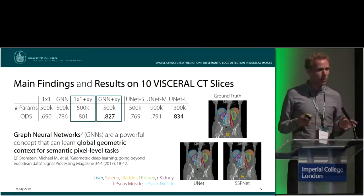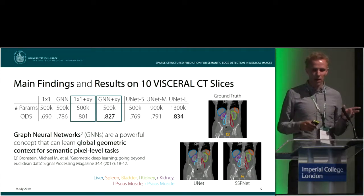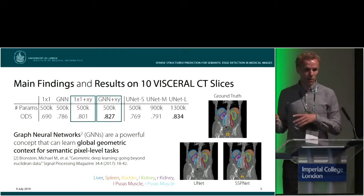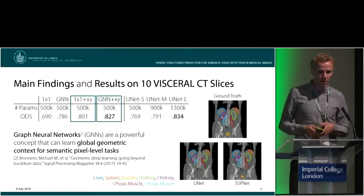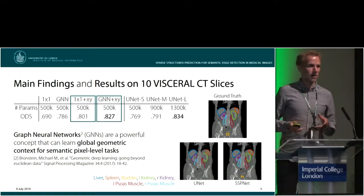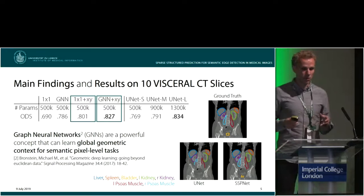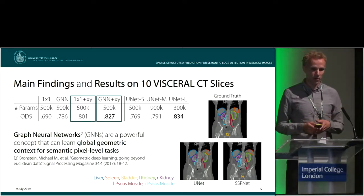One where we only used one-by-one convolutions and the other where we used a graph neural network. We can clearly see an advantage of the GNN in an improved ODS score, showing that it is advantageous to learn global geometric context.